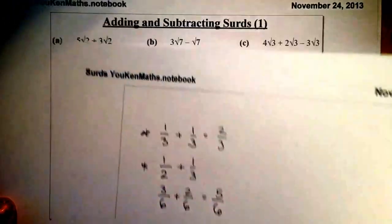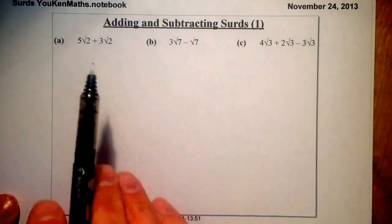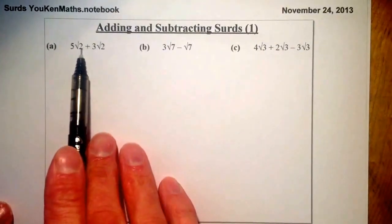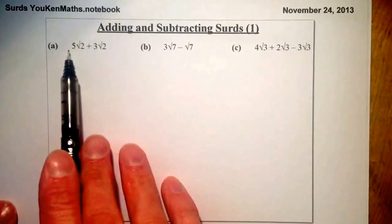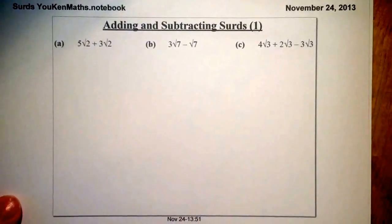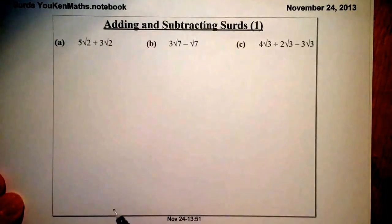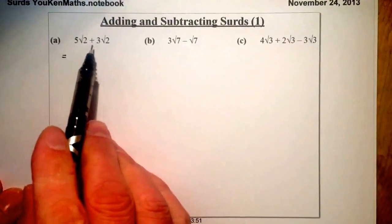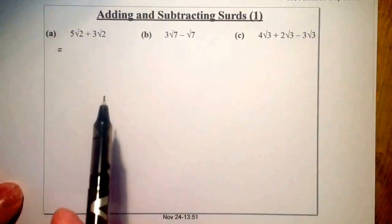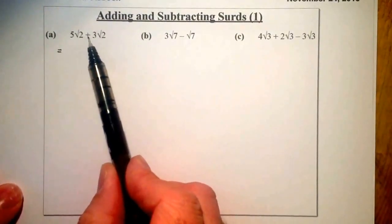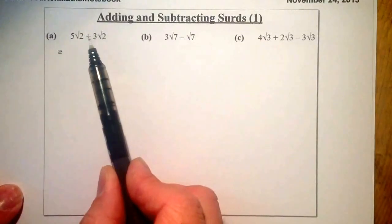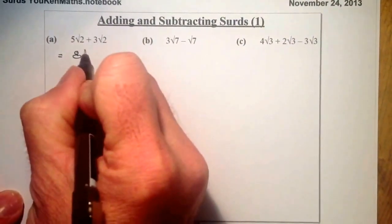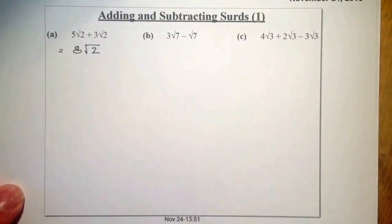When we add surds, what we have to make sure is that the number inside the surd — inside the root — is the same. When we get something like that, we can just add or subtract them. For the first question, I've got five root two plus three root two. I've got five of them plus three of them, so that gives me eight of them, and the things I'm dealing with are root twos — so that's just eight root two.